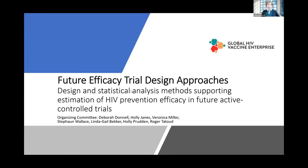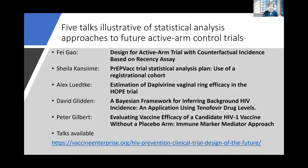I am now handing over to Deborah Donnell from the Fred Hutch to open today's panel discussion. Today, in this sequence of talks about future efficacy trial design approaches, we're focusing on the design and statistical analysis methods supporting estimation of HIV prevention efficacy for future active control trials. We hope that you have listened to each of these five talks, which illustrate various statistical analysis approaches to these future active arm control trials.